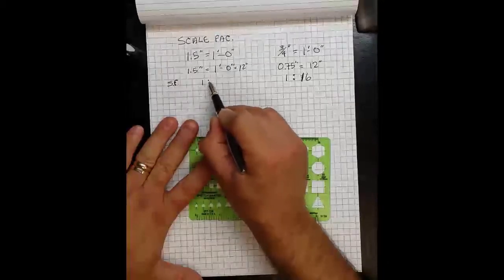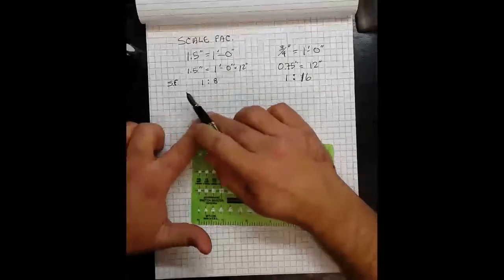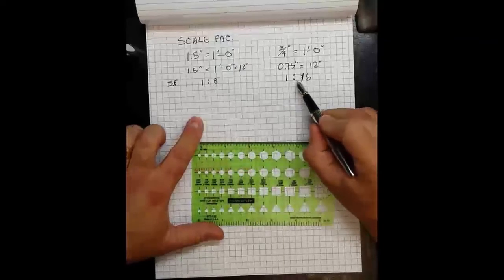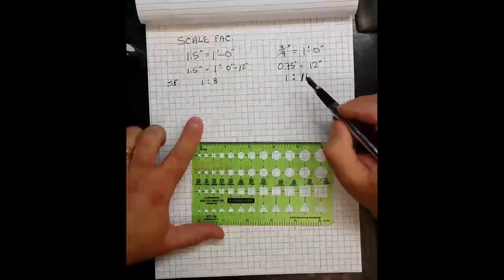And the ratio on this side is just 1 to 8. And what that means is every inch drawn on paper will equal 8 inches in the real world. And every inch drawn on paper will equal 16 inches in the real physical object at three-quarters scale.